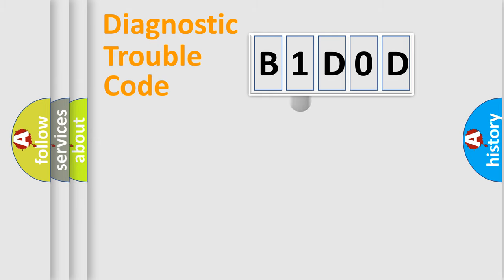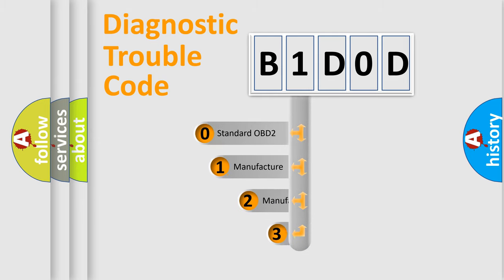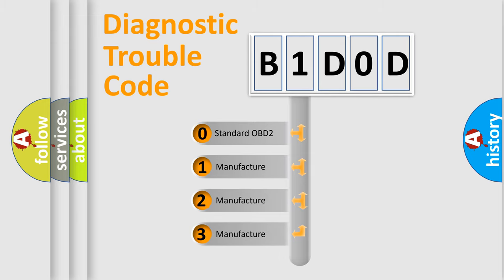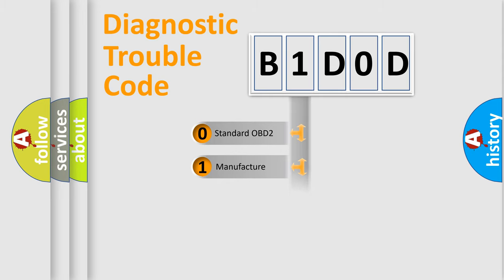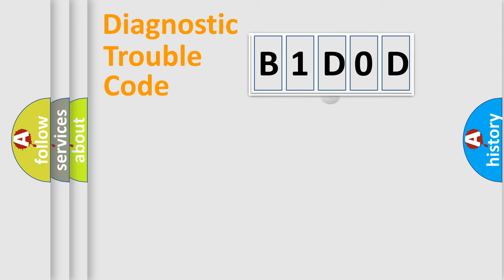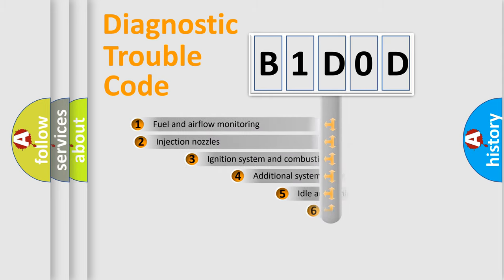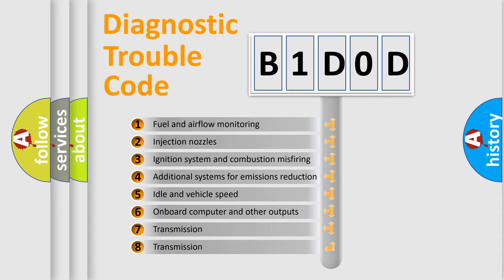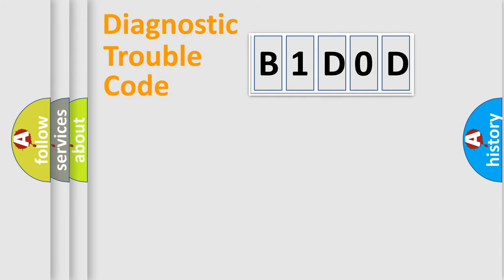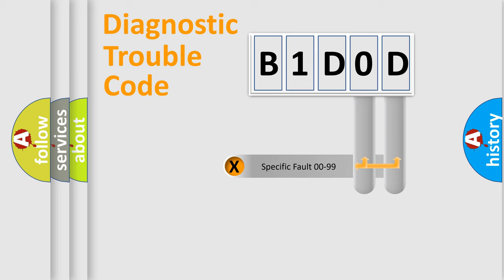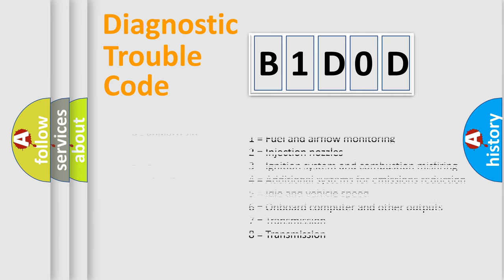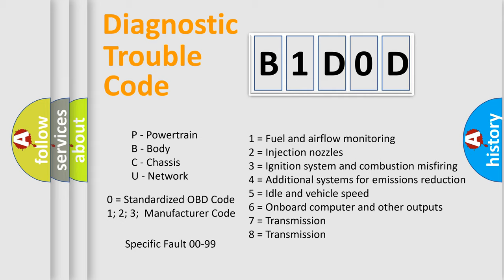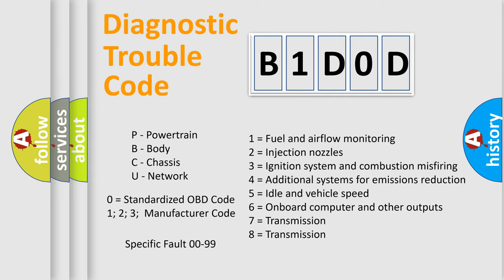This distribution is defined in the first character code. If the second character is expressed as zero, it is a standardized error. In the case of numbers 1, 2, 3, it is a more specific expression of the car-specific error. The third character specifies a subset of errors. The distribution shown is valid only for the standardized DTC code. Only the last two characters define the specific fault of the group. This division is valid only if the second character code is expressed by the number zero.